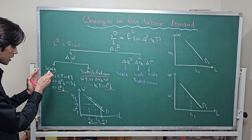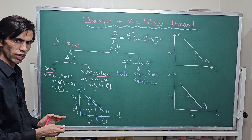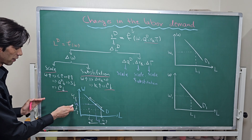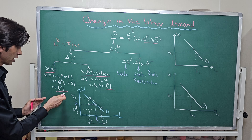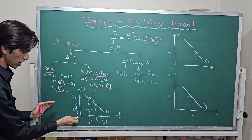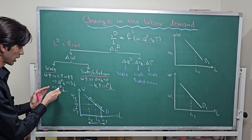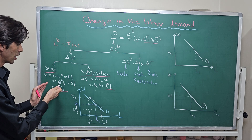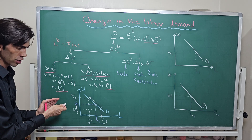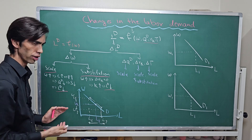In both cases — scale effect and substitution effect — we have the same direction. When the wage level increases, labor demand decreases. When the wage level decreases, labor demand increases. This is shown as movement along the labor demand curve.